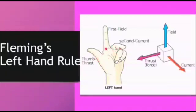If the thumb indicates the direction of motion, the first finger indicates the direction of external magnetic field, then the second finger will indicate direction of conventional current.